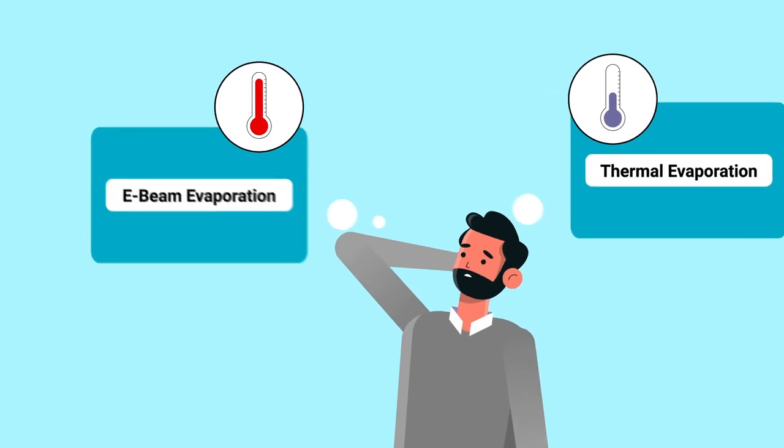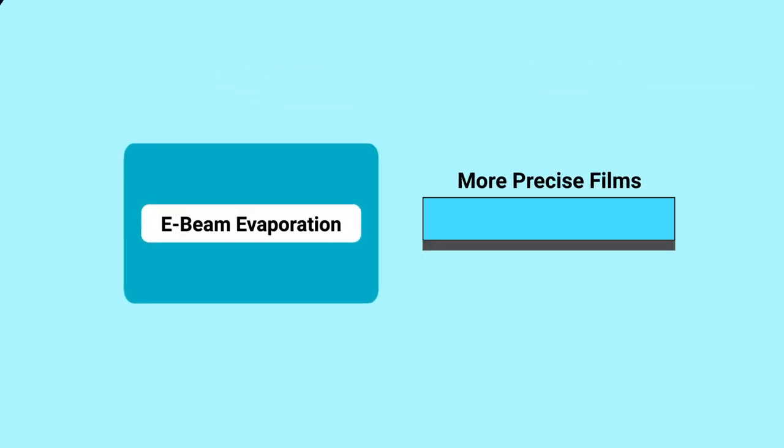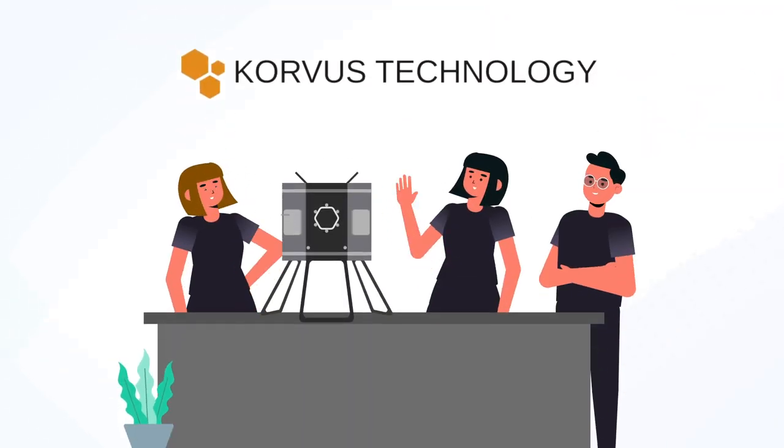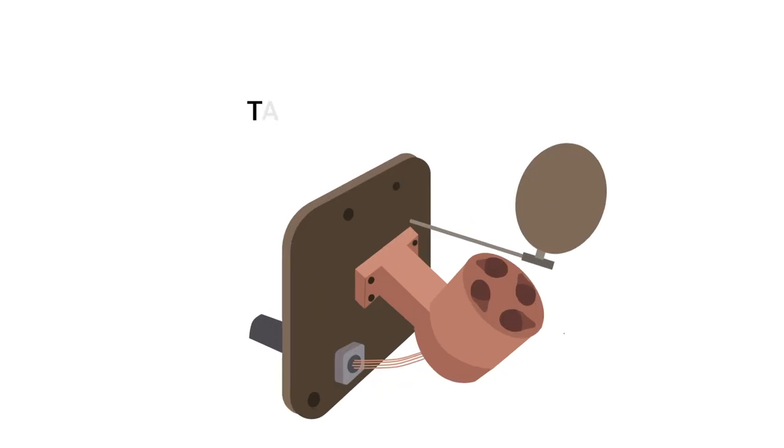And again, you'll also benefit from using e-beam if you require more precise control over the film thickness. At Corvus Technology, we've created the HEX series of modular thin film deposition systems, and the Tau Mini E-Beam Source is one of many customizations you can make to the system.